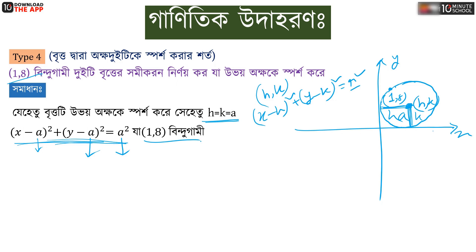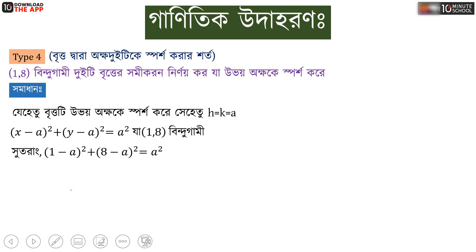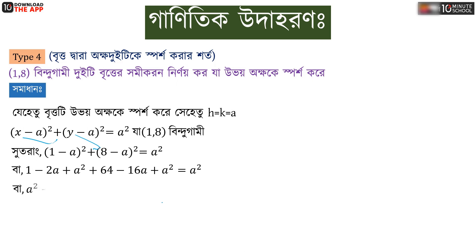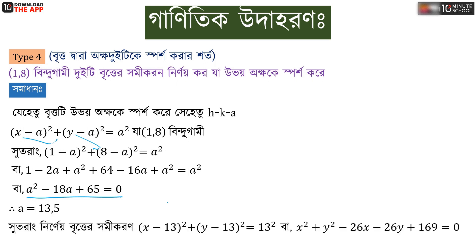We say that x equals 1, y equals 2, and the value is 8. For example, x minus 13 whole square plus y minus 13 whole square equal to 13 squared, which expands to x squared plus y squared minus 26x minus 26y plus 169 equal to 0.